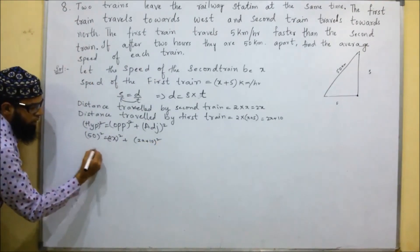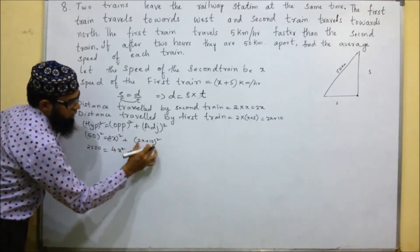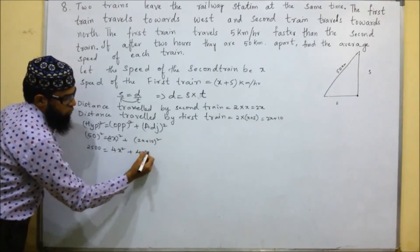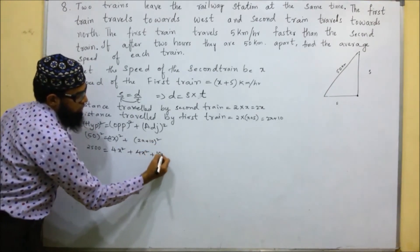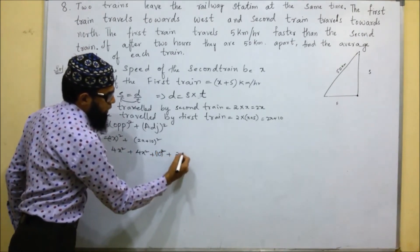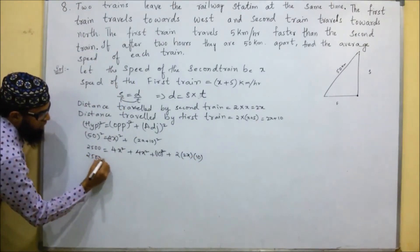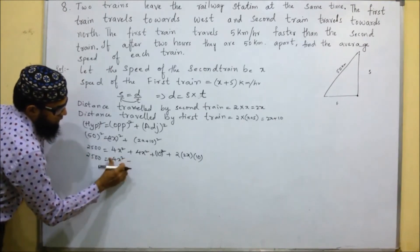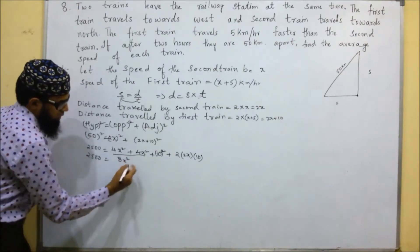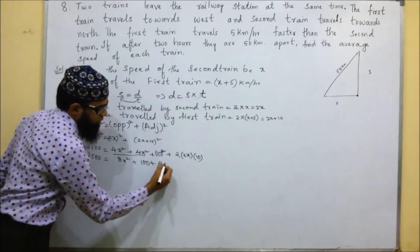So 50 squared is 2500. Expanding: (2x)² is 4x², and (2x+10)² uses the formula (a+b)² = a² + 2ab + b², giving 4x² plus 2 times 2x times 10 plus 100, which is 4x² plus 40x plus 100. So we have 2500 equals 8x² plus 40x plus 100.